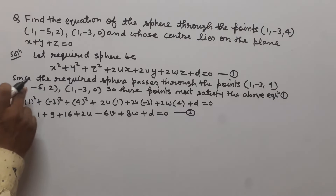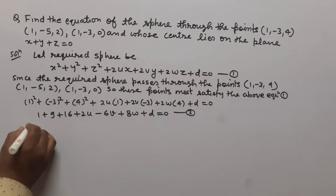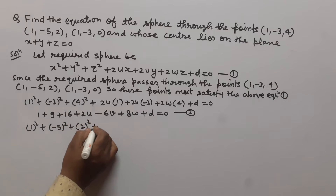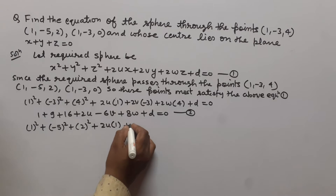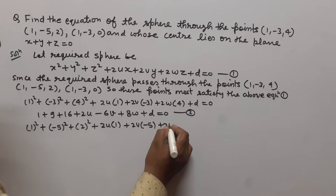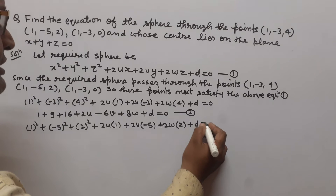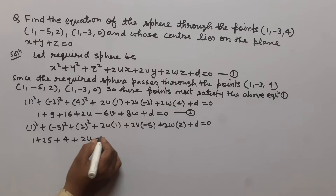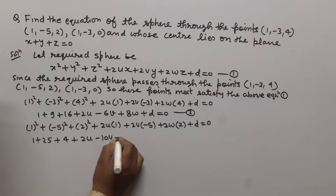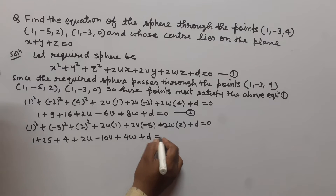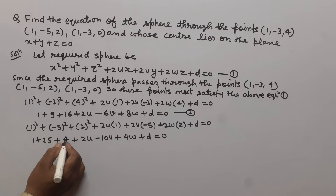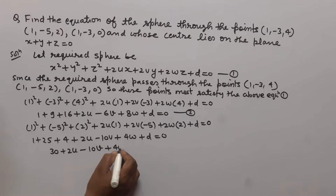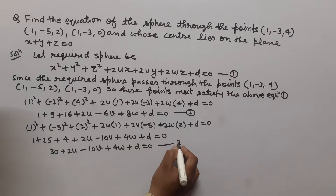Now we put the second point (1, -5, 2) in equation 1. We get 1² + (-5)² + 2² + 2u(1) + 2v(-5) + 2w(2) + d = 0, giving 1 + 25 + 4 + 2u - 10v + 4w + d = 0, so 30 + 2u - 10v + 4w + d = 0. Suppose this is equation 3.